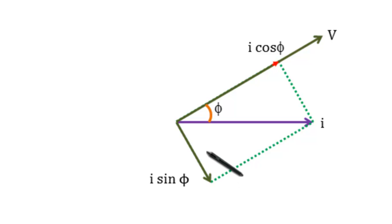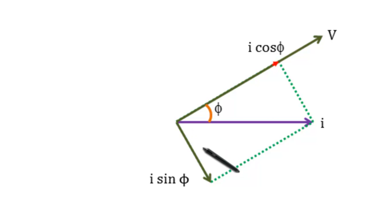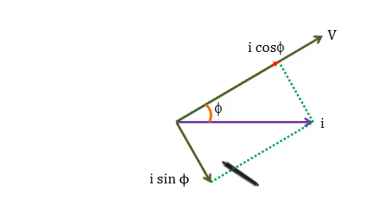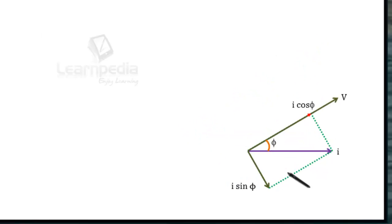The average of the wattless component over one cycle is equal to zero. The amplitude of wattless current is I₀ sin phi, and the RMS value of wattless current is I_RMS sin phi, which equals I₀ by root 2 times sin phi. It is in quadrature — 90 degrees with the voltage.